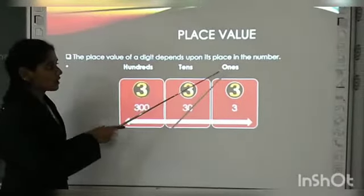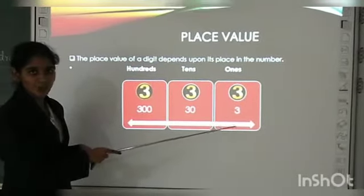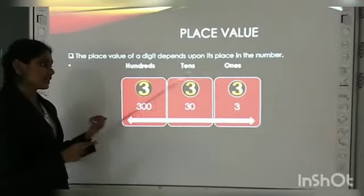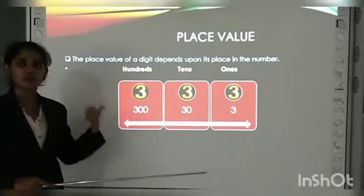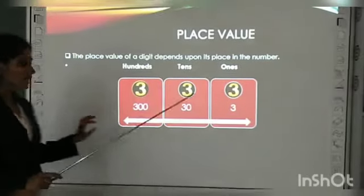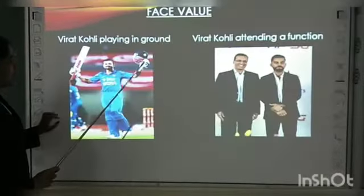These digits, if they are in one's place, the value becomes ones. If the same digit is in ten's place, it becomes tens. If it is in hundreds, it becomes more powerful - hundreds.